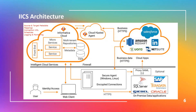Apart from these two job processing options, there is a third option where the secure agent can be installed on cloud computing services such as AWS, Azure, or GCP, maintained by the customer. So this is all about IACS architecture. In this video we have discussed IACS capabilities, why to use IACS, and finally we understood the architecture of IACS.